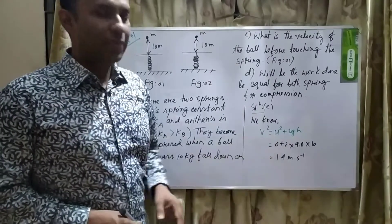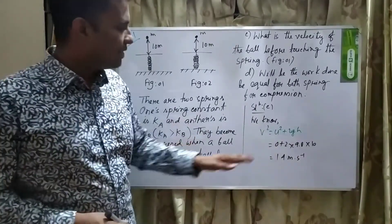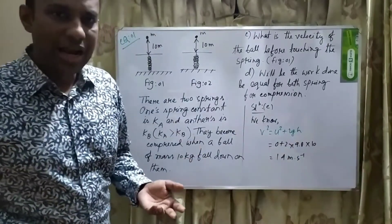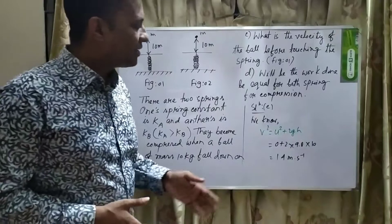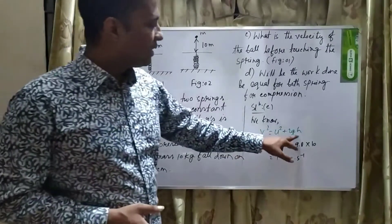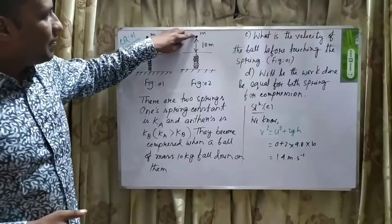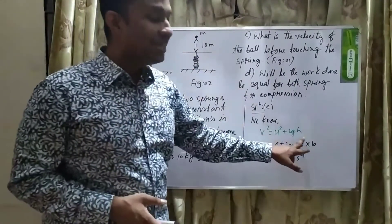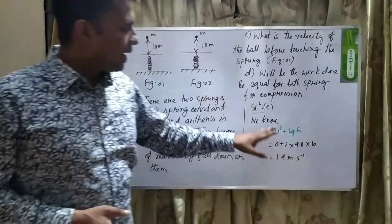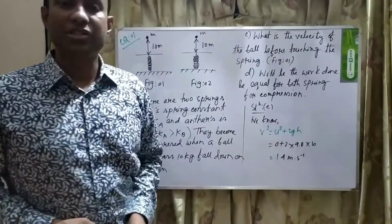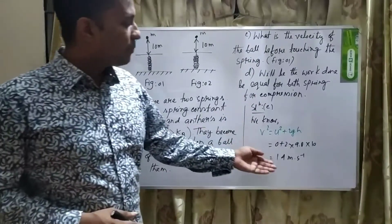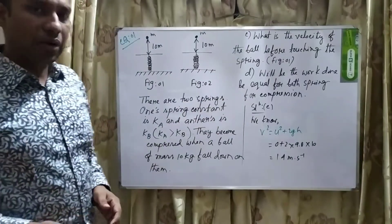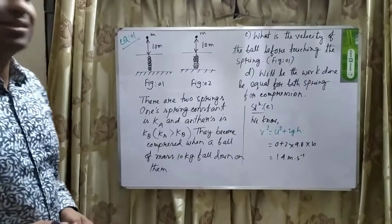The value of u, the initial velocity of the ball, is 0. G means acceleration due to gravity, and its value is 9.8. The ball has fallen from a height of 10 meters. So the height is 10 meters, and the answer is 14 meters per second. With 14 meters per second, the ball will touch the ground.